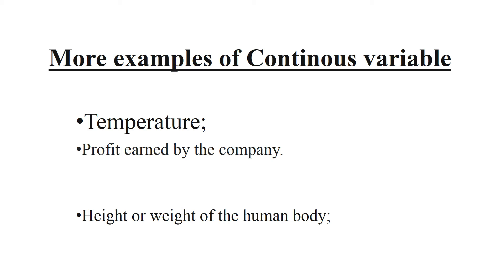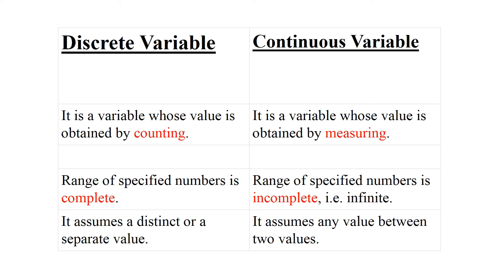Now let's look at the comparison chart for discrete versus continuous variables. A discrete variable is one whose value is always obtained by counting — for example, how many children do you have, or how many cars have been sold. A continuous variable, on the other hand, is one whose value is obtained by measuring — for example, measuring temperature, height, weight, blood pressure, or sugar level.